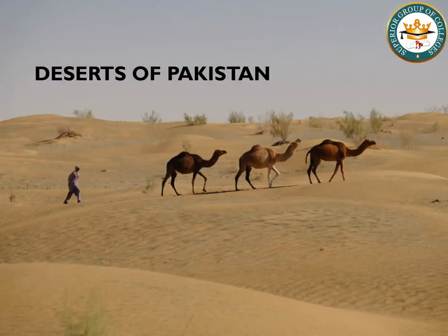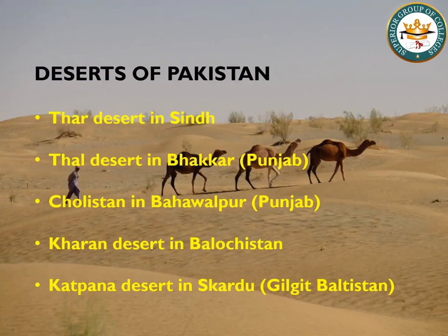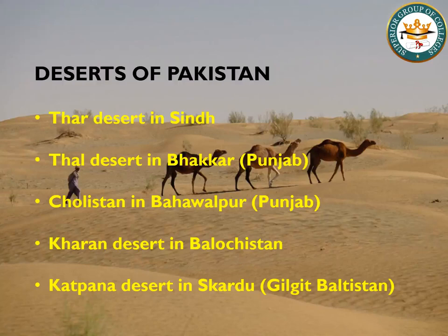First, let's discuss the deserts of Pakistan. Pakistan has five types of deserts. The biggest desert is the Thar Desert, which is present in Sindh province. After that, the Thal Desert is present in Punjab in the Bakkar area. Cholistan Desert is in Bahawalpur, Punjab. Kharan Desert is in Balochistan, and the cold desert is in Gilgit-Baltistan, in Skardu.